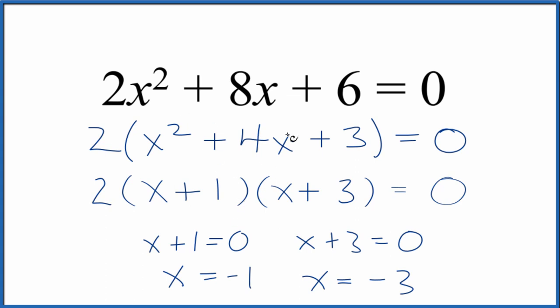If you put -1 here in this equation for x, -1, -1, or up here, you'll find that all of this, or all of this, would equal 0. Likewise, if you put -3 in for x here and here, or here and here, it would all equal 0 as well. So these are the correct roots.